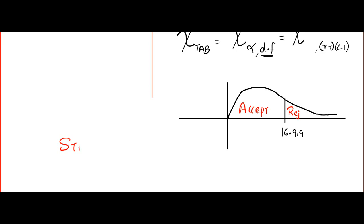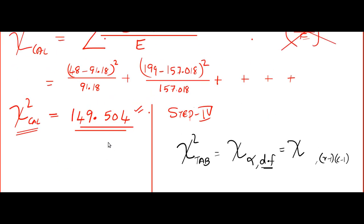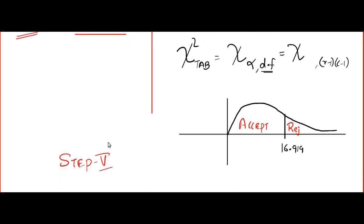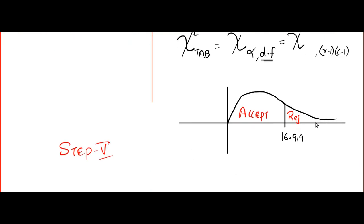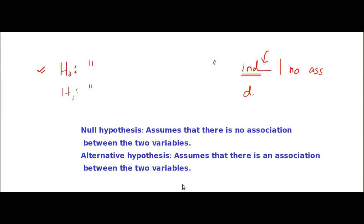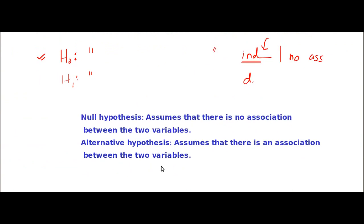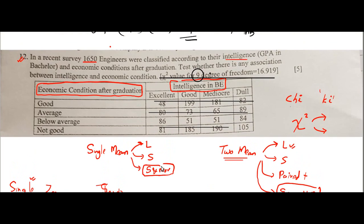Now, what is step number 5? A very easy step. Take the calculated value. Oh, 149. 149 is definitely in the rejection part. So, we conclude reject H naught. That is, we write accept H1. Accepting H1 means yeah, there is an association between the two variables. That means, it's good news. If someone is performing really good in BE, according to this research, the economic condition after your graduation will be connected. That means, if you are good, then your conditions will be good. If you are dull, that means the condition will not be that good.